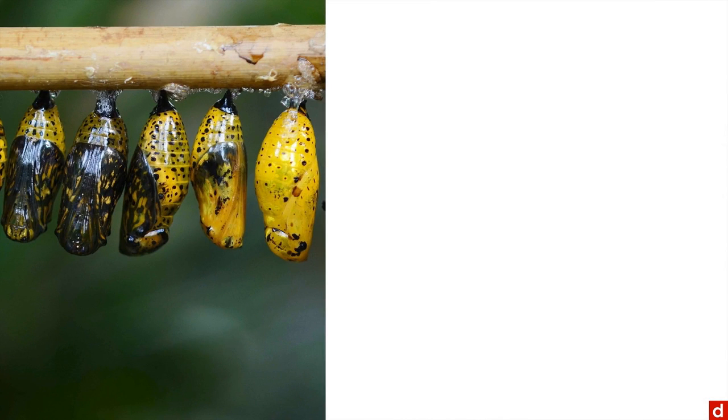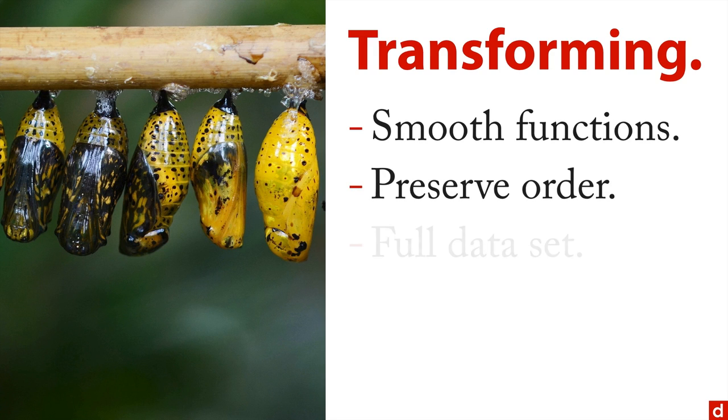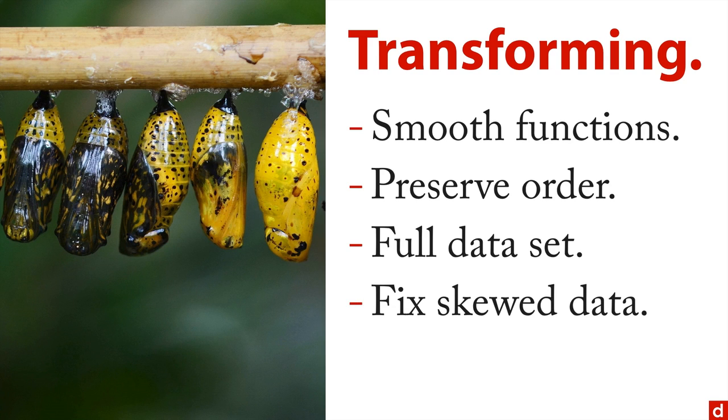And then finally, there's transforming variables. Here's our caterpillars in the process of transforming into butterflies. But the idea here is you take a sort of difficult data set, and then you do what's called a smooth function. There's no jumps in it. It's something that preserves the order and allows you to work on the full data set. So you can fix skewed data, and in a scatter plot you might have a curved line. You can fix that.